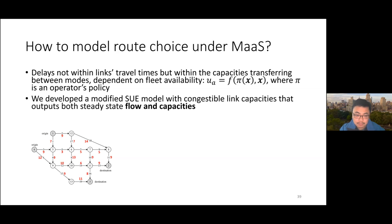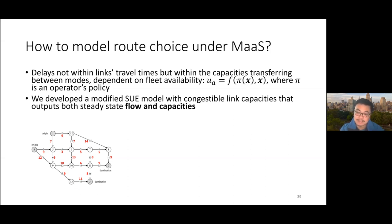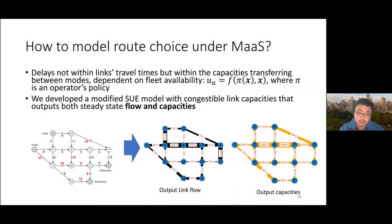We've been developing a modified stochastic user equilibrium model in which we consider queue delay, but the queue delay is linked to a capacity effect dependent on system flow interdependencies. This allows us to model a mobility-as-a-service or multimodal network, outputting not just link flow but also the dynamic capacities — or at least a steady state of the dynamic capacities.